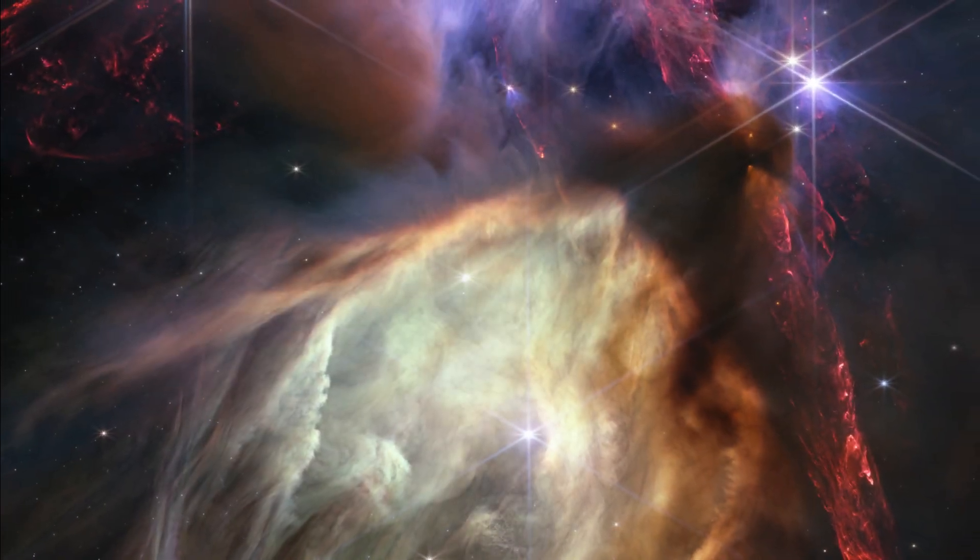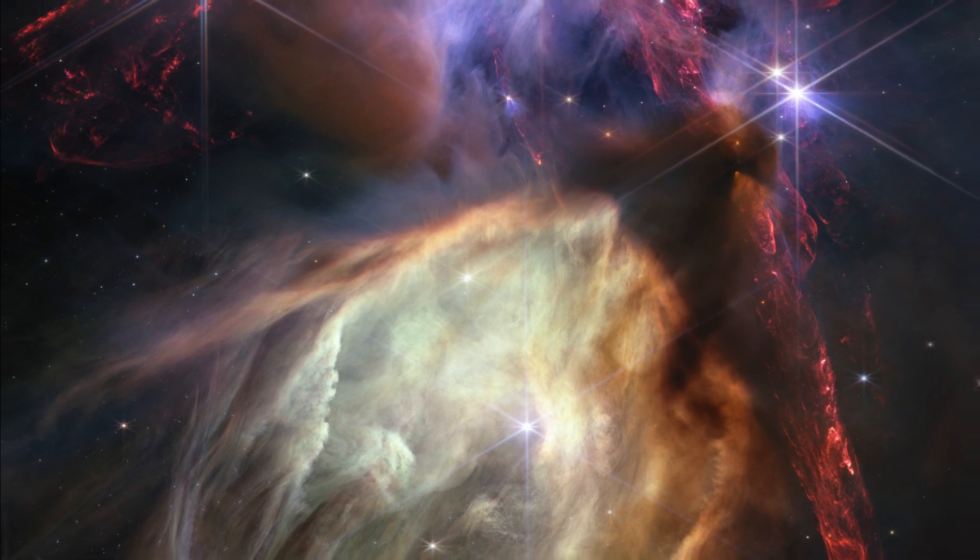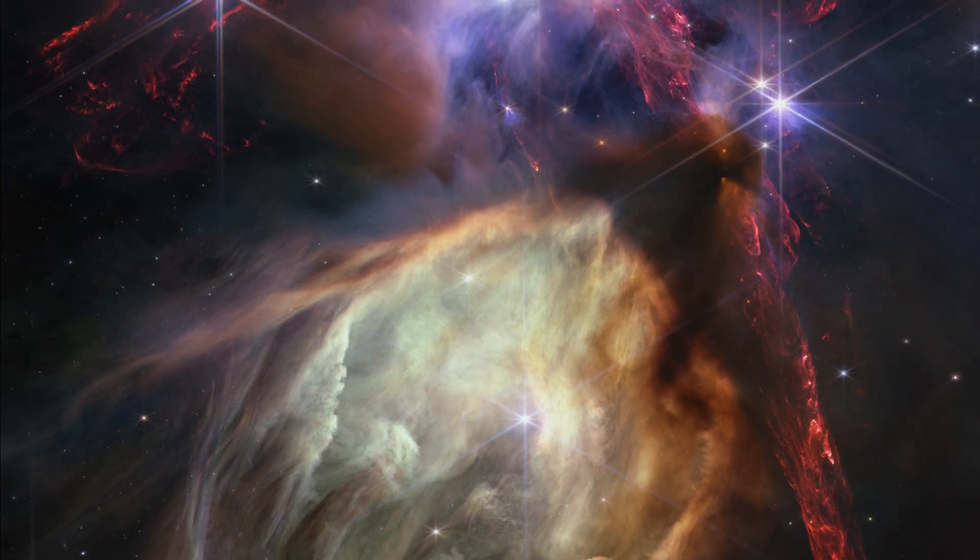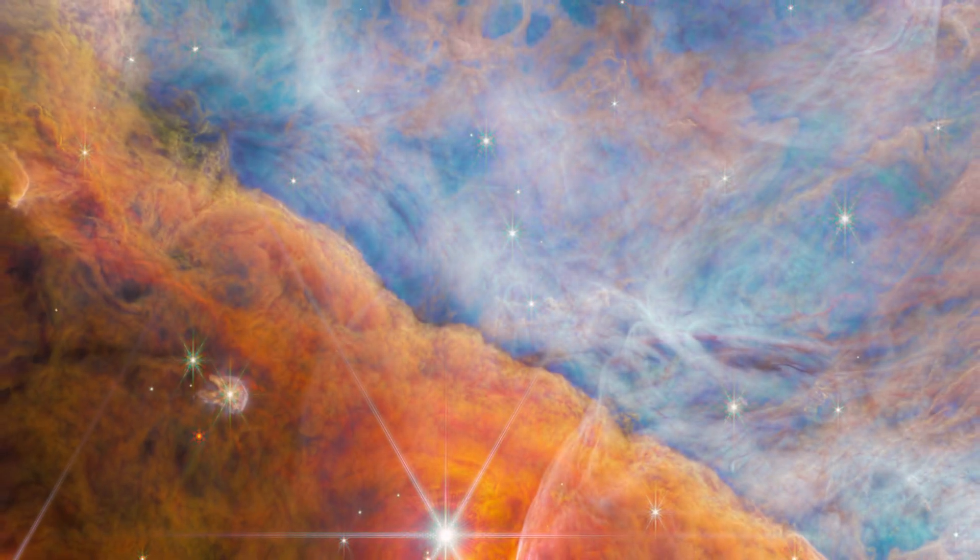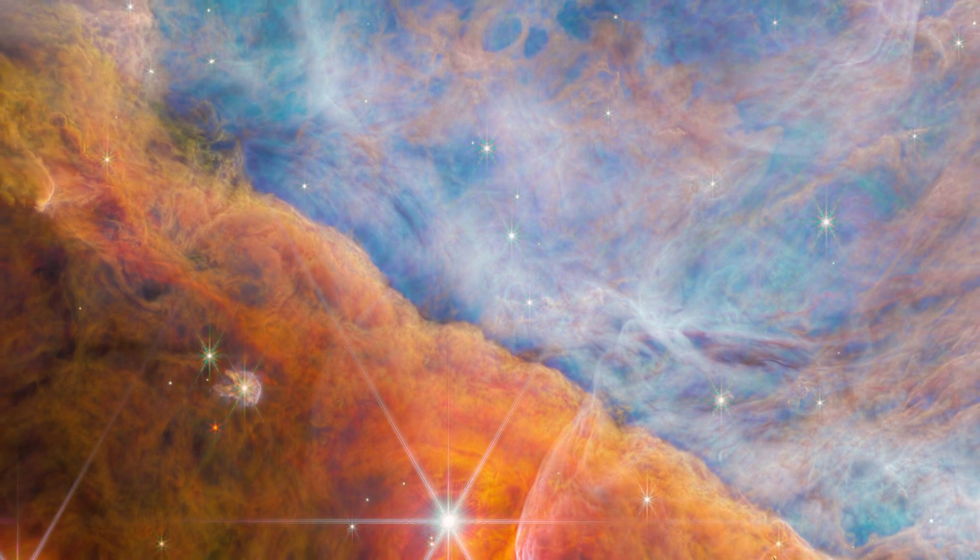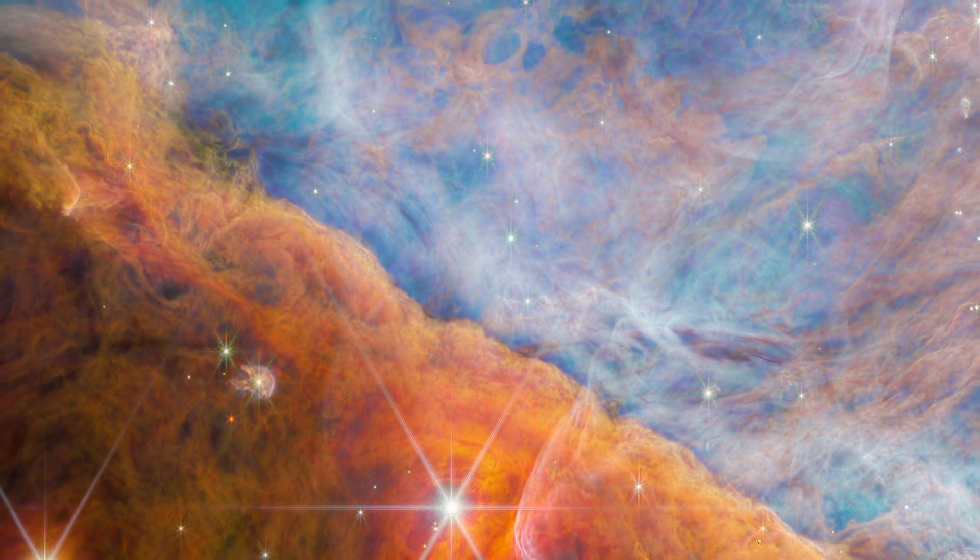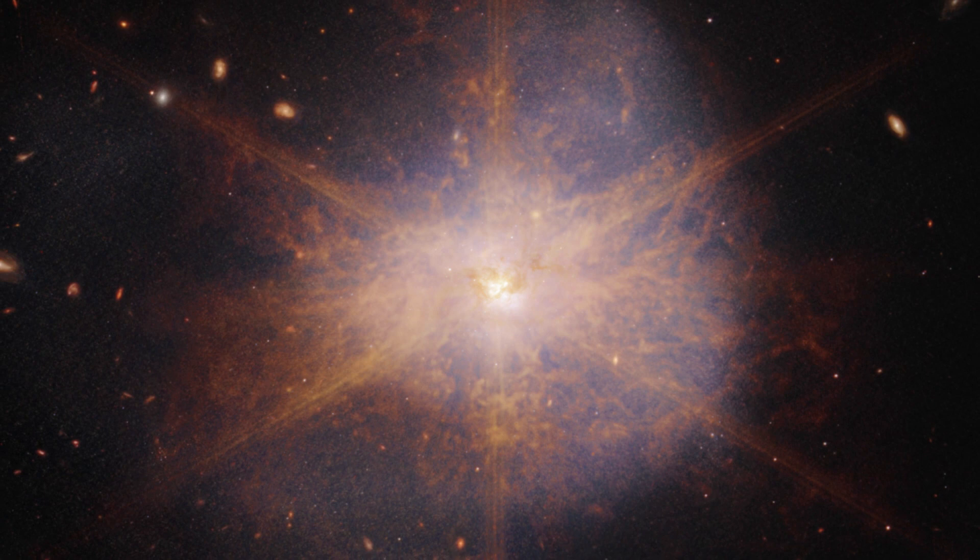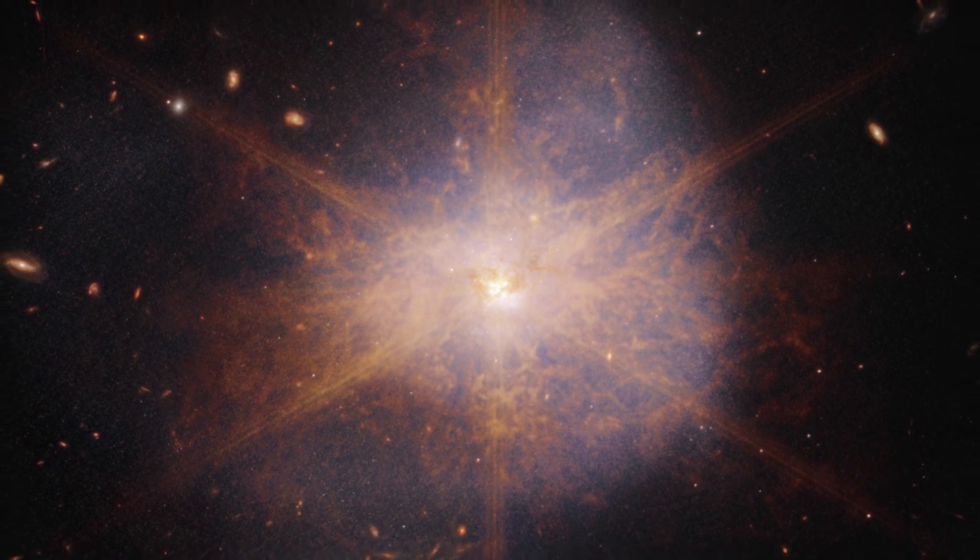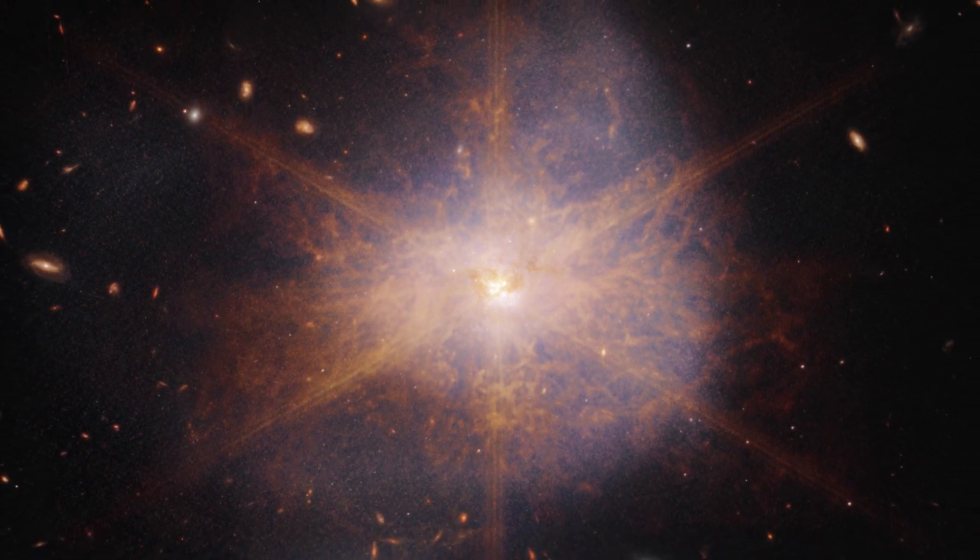These far-off galaxies are supposed to represent what the universe looked like just 400 to 500 million years after the Big Bang. But the stars in these galaxies appear to be over a billion years old. How can that be if the universe itself is only 400 to 500 million years old at that point?